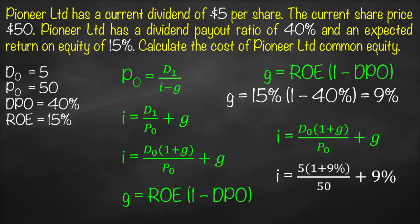Now let's substitute into our cost of equity formula. Cost of equity equals the current dividend of $5 multiplied by (1 + 9%), divided by the share price of $50, plus g of 9%. This gives us a cost of equity of 19.9%.